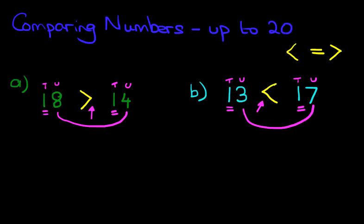And it really is as simple as that when we are comparing numbers up to 20. Again, we've said this before, we'll say it again. Always make sure that the arrow is pointing towards the smaller number.